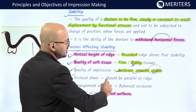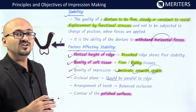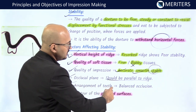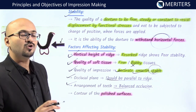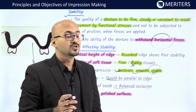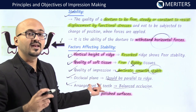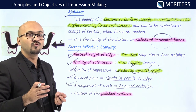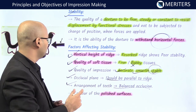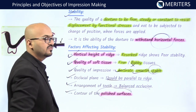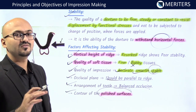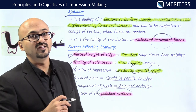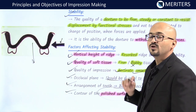Further factors affecting stability include the occlusal plane being parallel to the ridge — if canted, lateral forces will destabilize the denture. Arrangement of teeth with balanced occlusion, meaning simultaneous contact posteriorly and anteriorly in eccentric movements, is important for stability. Any occlusal interferences will move the denture from its place. The contour of the polished surface also matters — inappropriate contours generate horizontal forces that can dislodge the denture.